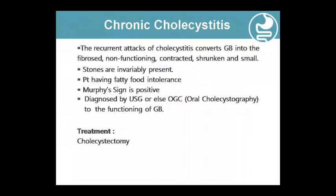In chronic cholecystitis, there is fibrosis and contracture of the gallbladder with stone formation. The patient presents with fatty food intolerance. Diagnosis is confirmed by USG, which shows the chronic fibrotic changes.